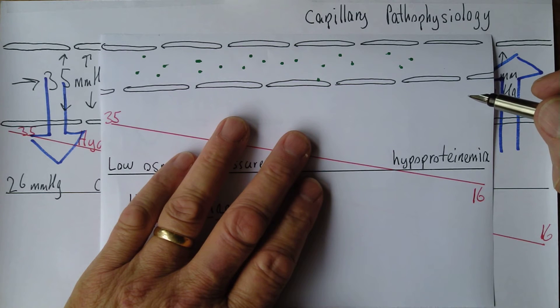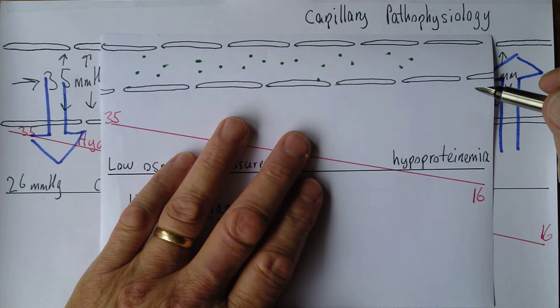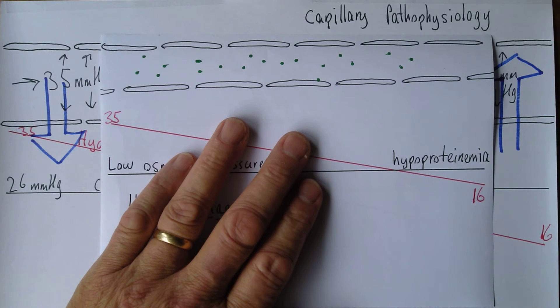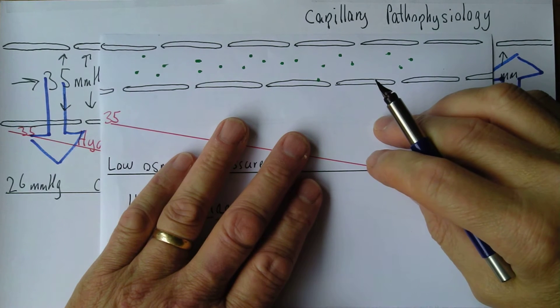If someone's not getting enough protein to eat, their lymphocytes, their B lymphocytes, cannot synthesize the immunoglobulins. That's of course why people become immunosuppressed if they're malnourished. If you have not got the amino acids to make the antibodies, how can the B lymphocytes make the antibodies?